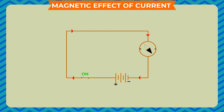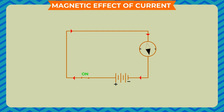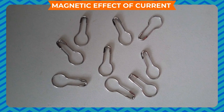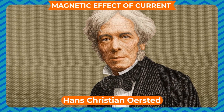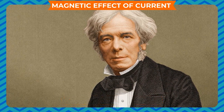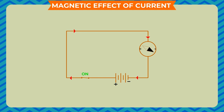A magnetic needle can be deflected only by a magnetic field. Thus, it is obvious that the passage of electric current produces a magnetic field. It can be concluded that a current-carrying wire behaves as a magnet; however, it is not a strong magnet — it is just strong enough to attract small pins or iron nails. Hans Christian Oersted was the first person who noticed the deflection of a compass needle every time the current was passed through the wire.